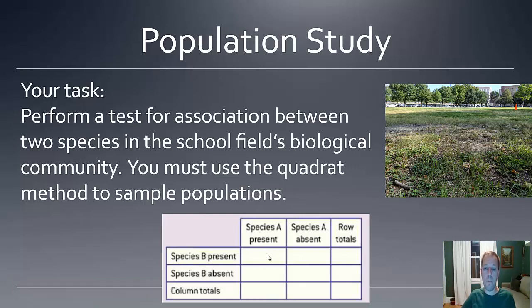So both of them being present, one of them being present and one absent, or vice versa, or when it is that they're both absent. From there, you can use a statistical test called chi-square, which will be detailed in another video, in order to be able to determine whether or not these organisms are associated.